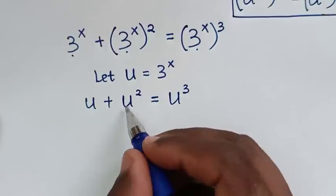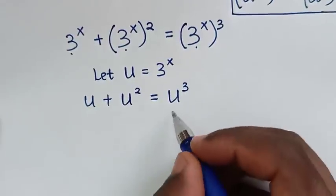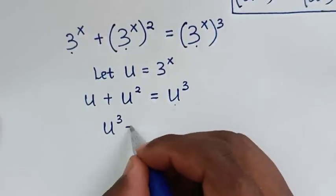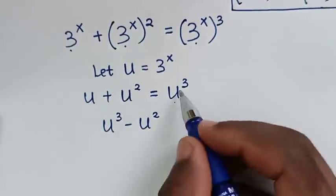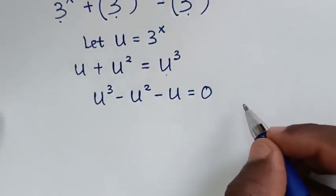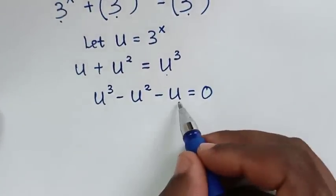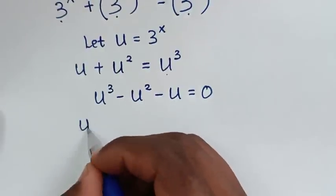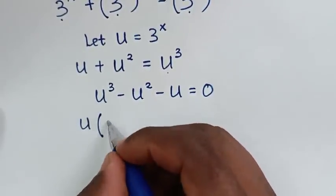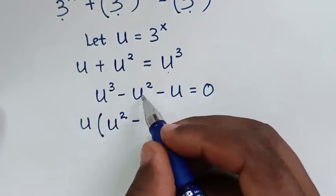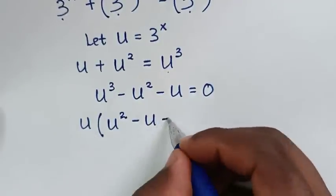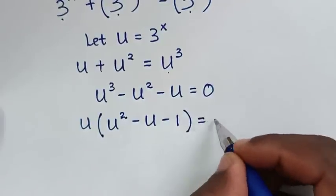We rearrange by moving all terms to one side: u³ minus u² minus u equals 0. Then we factor out u from the left side, giving u times (u² minus u minus 1) equals 0.